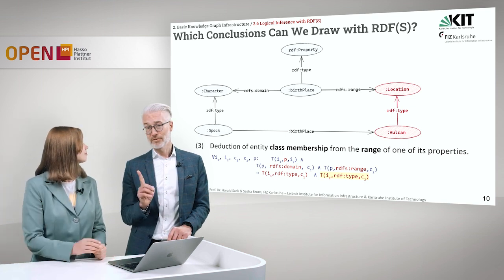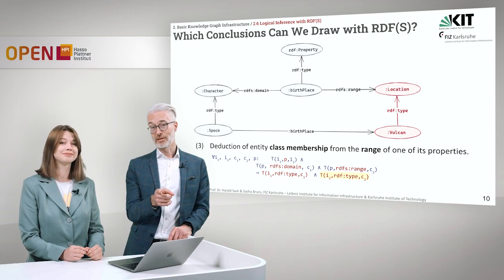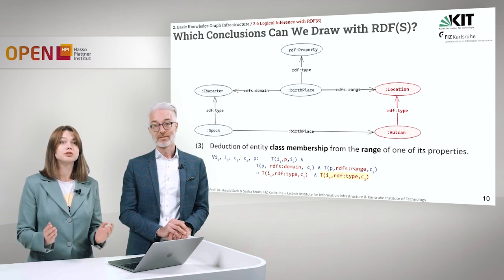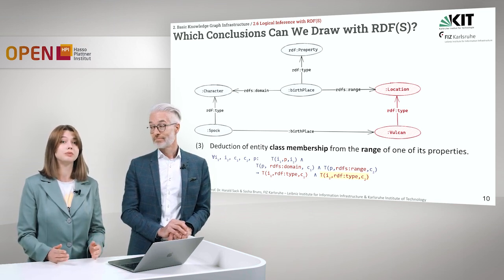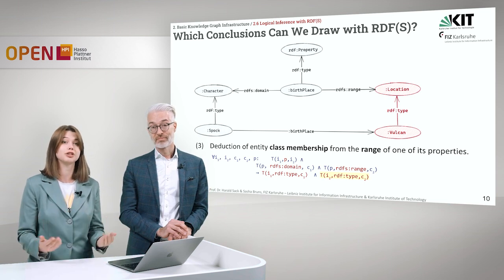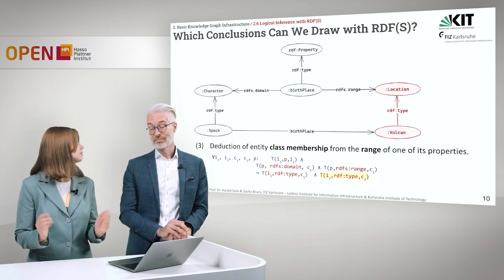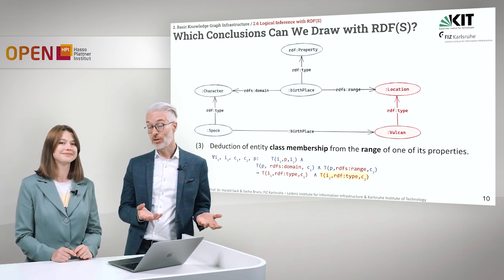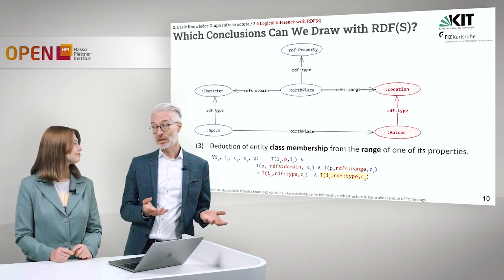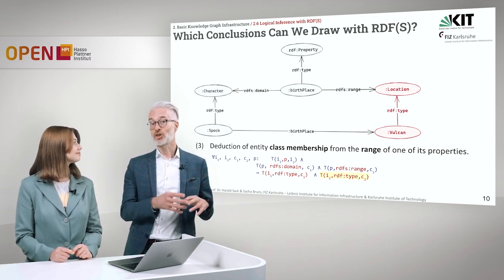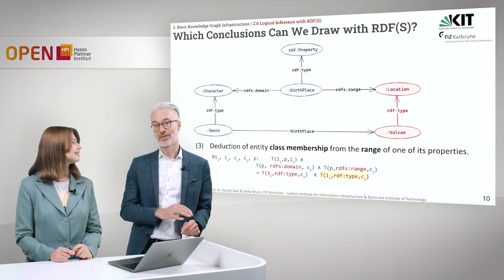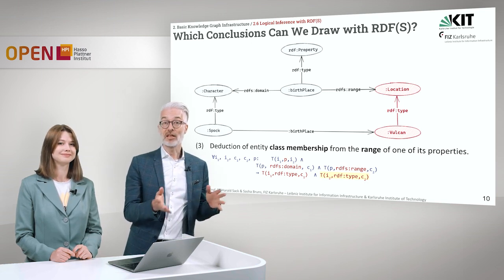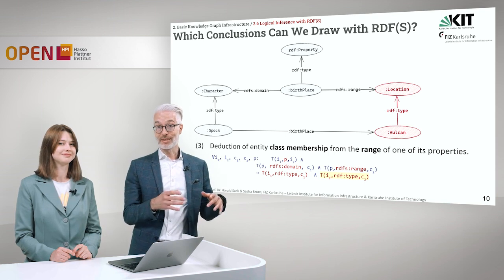But what if, for example, Spock was defined to be a person previously? These two facts are not disjoint — Spock could be a person and a character. That does not change anything, and one instance can belong to multiple classes. So we can derive additional information that is not necessarily contradictory. To be contradicting, character must be defined to be disjunctive with the previous class. Then that might lead to an inconsistency, but keep in mind this is an add-on, not a contradiction.